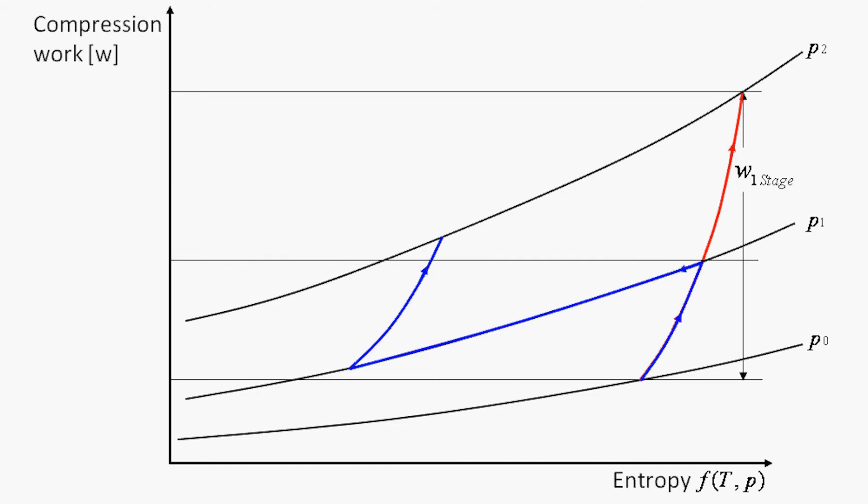If you sum up the amounts of compression work that the turbochargers of two-stage turbocharging have to perform to reach the charge air pressure, and compare it to the work that the one turbocharger of single-stage turbocharging has to perform to achieve the same pressure, it becomes evident that two-stage turbocharging requires around 10% less work for the same result.